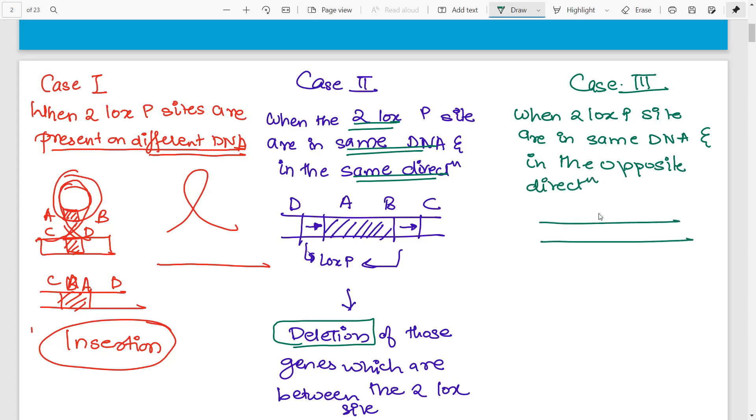For example, let's take this construct where you have genes A, B, C, D. Here you have one LOXP site, the other LOXP site, and this time they are in opposite orientation. If they are in opposite orientation, then inversion is seen.